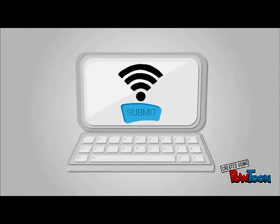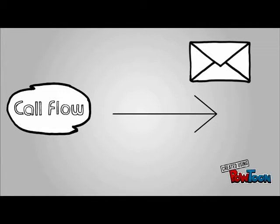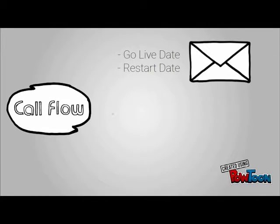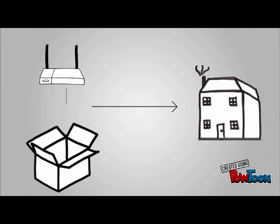We will then apply for the broadband and inform you of your go live date as well as a reminder of your restart date. We will then send out a router to your property ready in advance for your go live date.